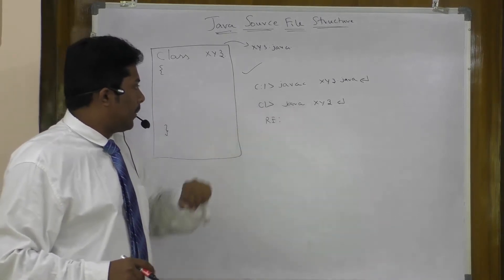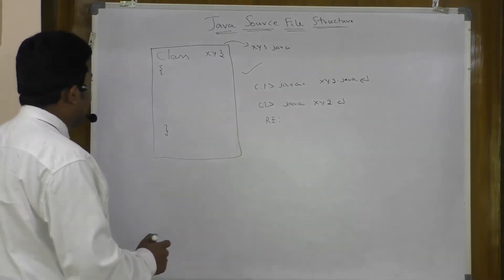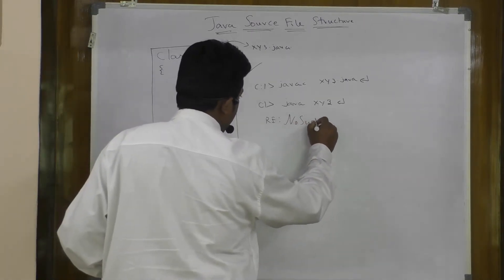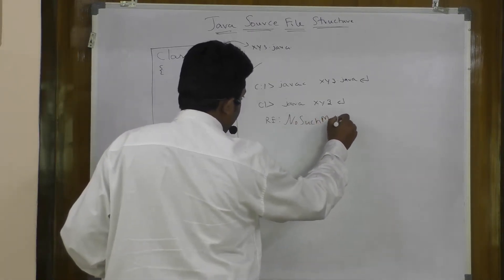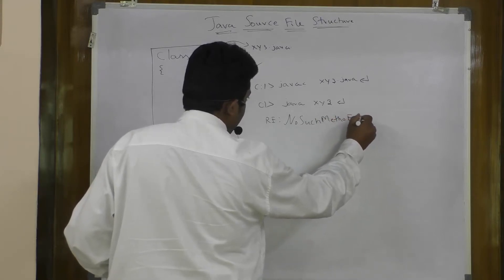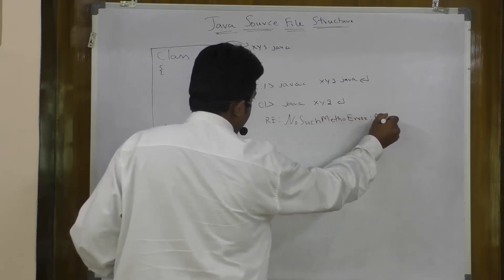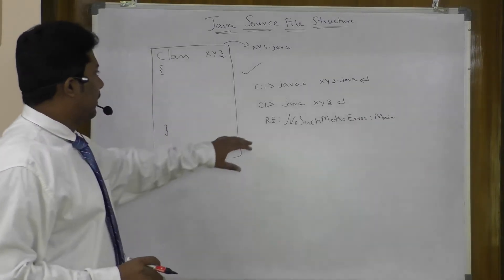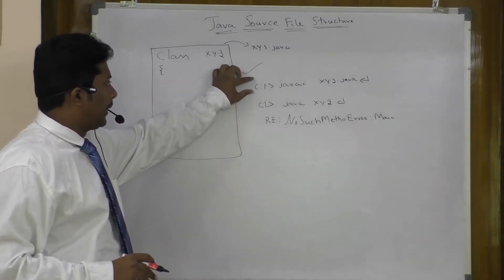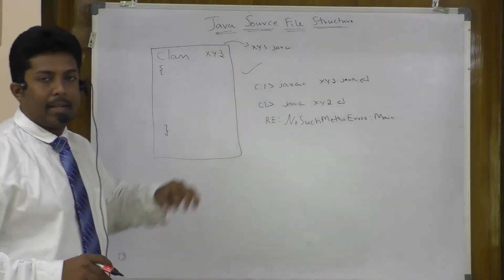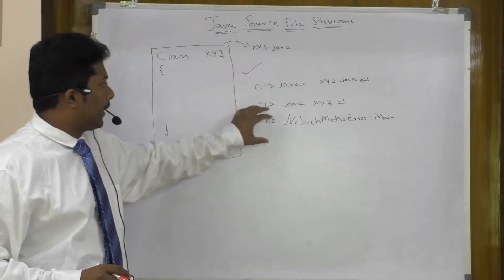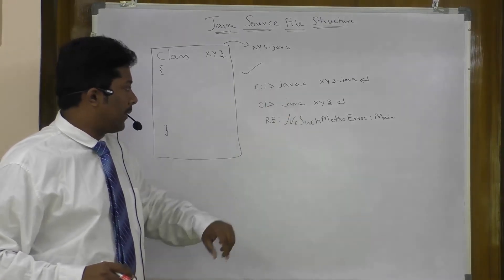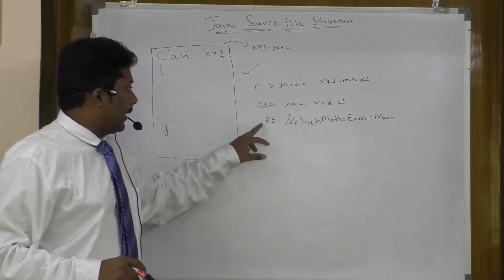So we have clarity now: not having a main method is not a problem for the compiler, it is a problem for the JVM. 'NoSuchMethodError: main' will come at runtime. There is a difference between compile-time errors, which are syntactical errors, and runtime exceptions, which occur when you are running a Java class.